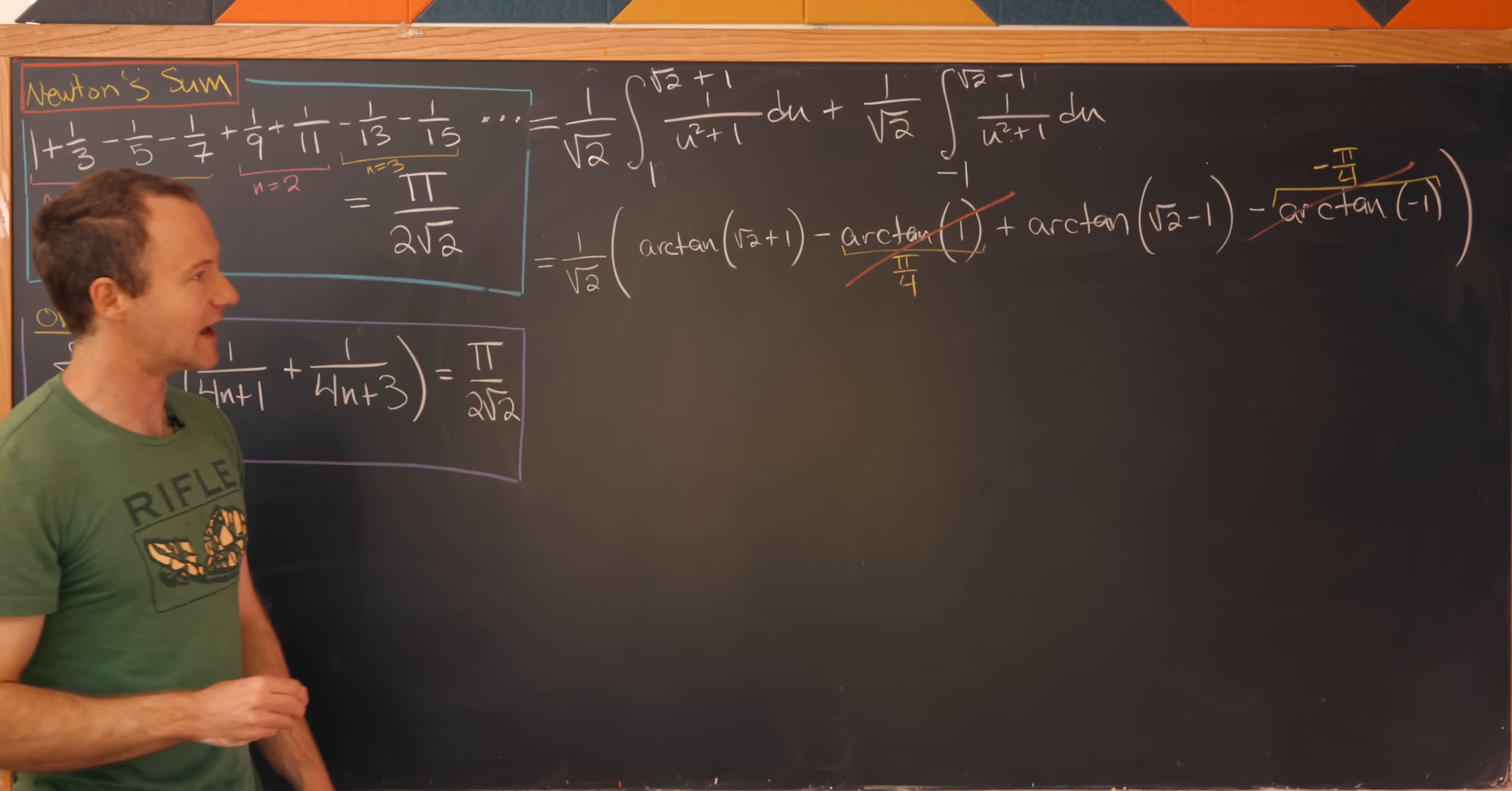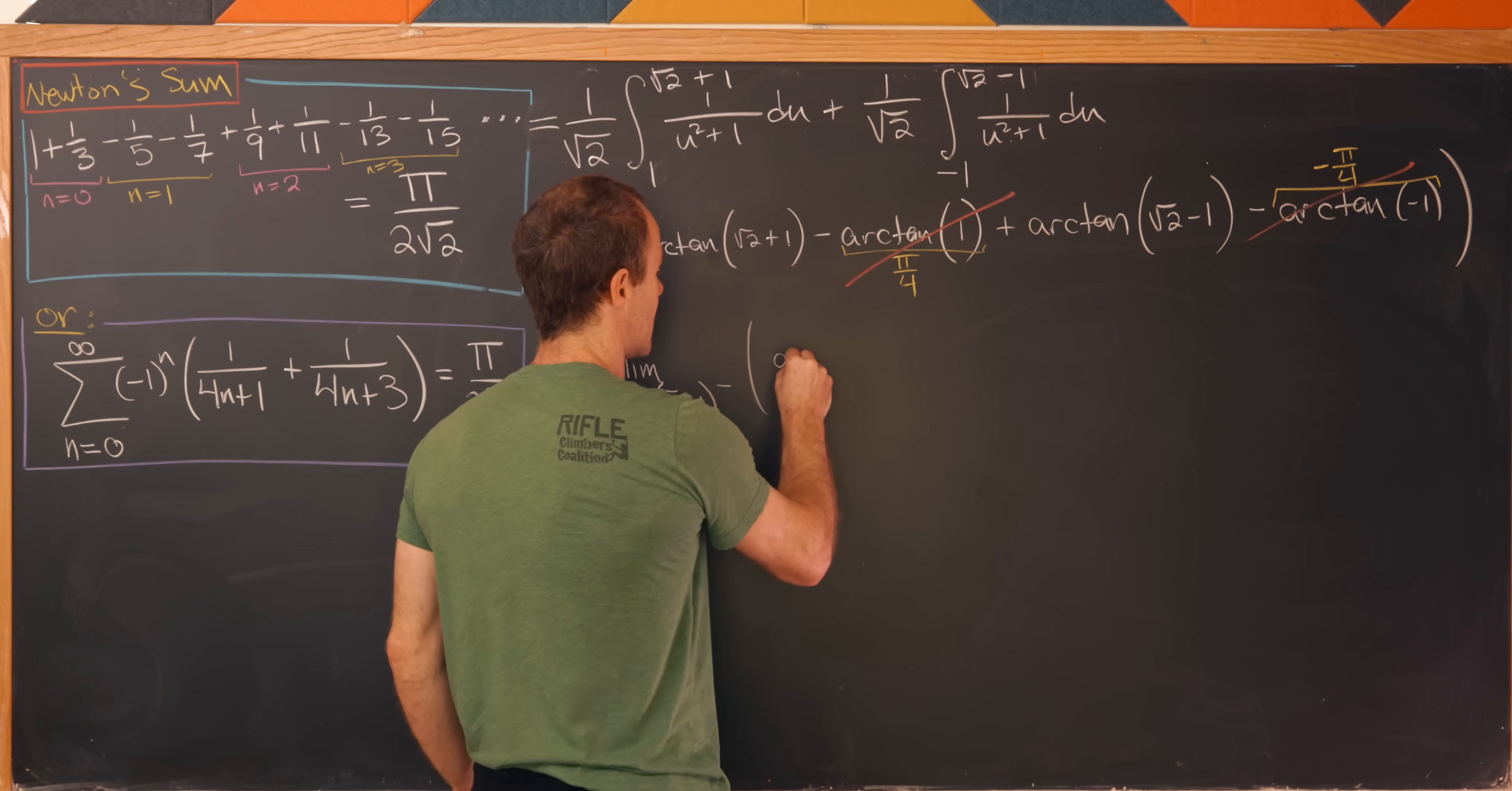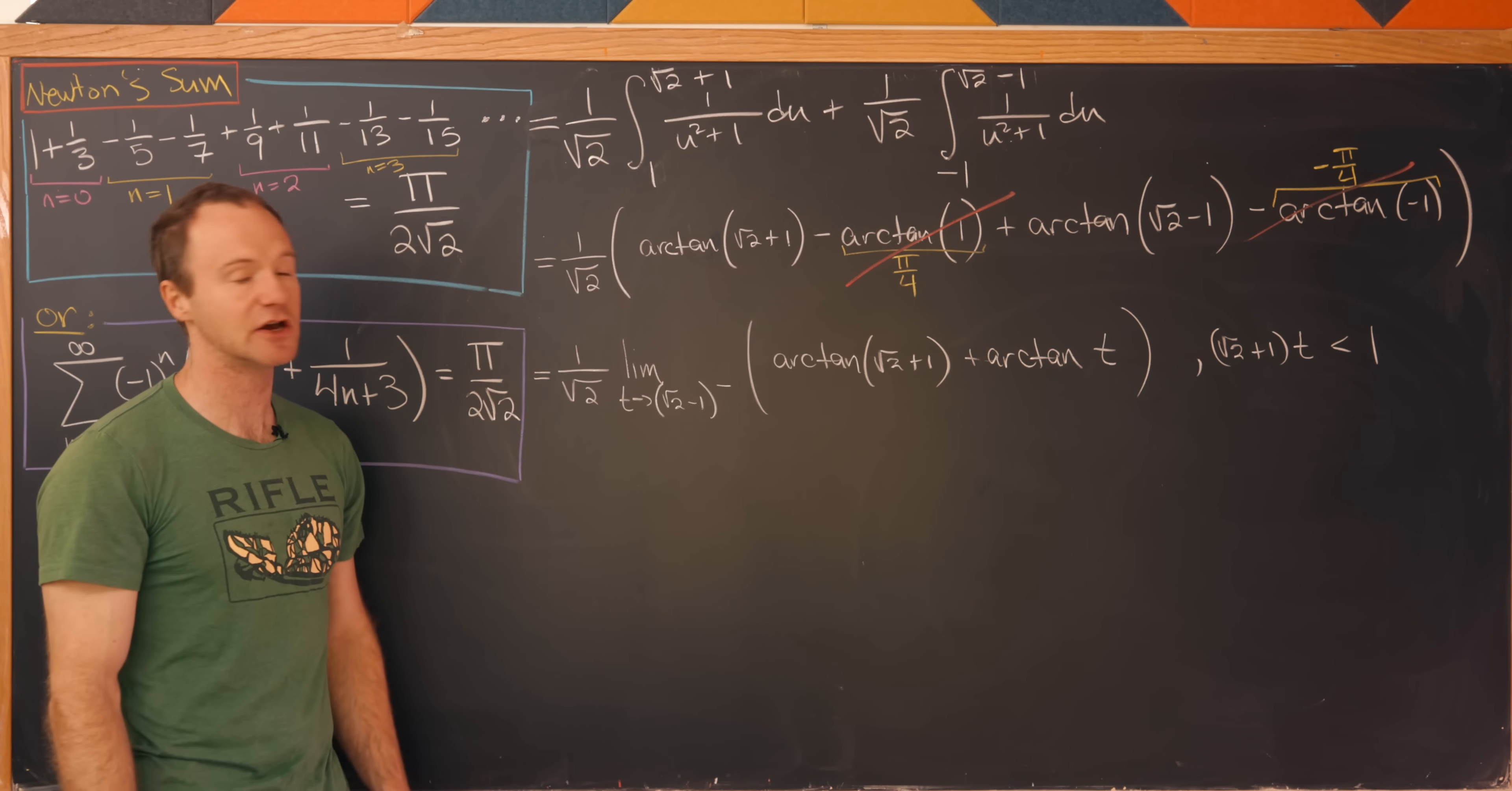But that being said, I'm going to write this in a tricky way using a limit so we can use a well-known arctan identity. So I'm going to write this as 1/√2, and then I'll take the limit as t goes to √2 - 1 from below of the arctan of (√2 + 1) plus the arctan of t. And now let's notice in this setup we have (√2 + 1)·t is less than 1. That's because here we're taking this limit as t goes from below.